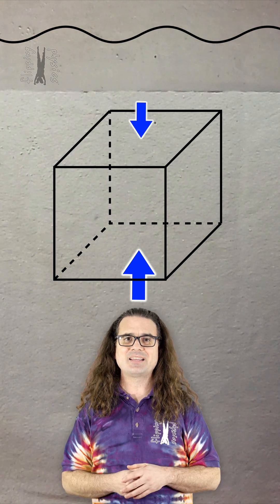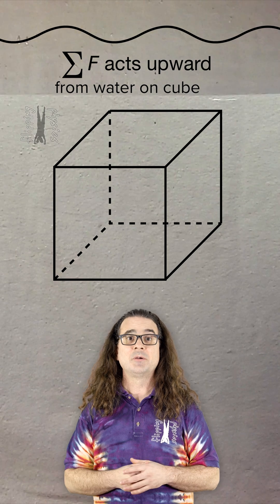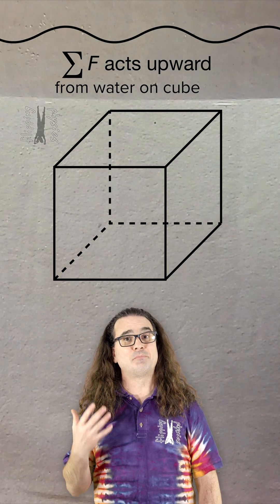In other words, the net force acting on the cube caused by the pressure from the water acts upward on the cube. That upward net force is called the buoyant force.